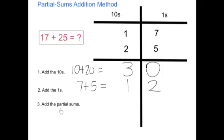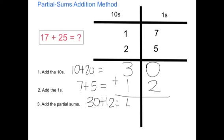Now step 3 is to add the partial sums. The partial sums mean adding the tens and the ones and combining them together. One part is the tens place, which we got 30. The next part is adding the ones together, where we got 12. So I'm going to add together 30 plus 12, which is equal to 42.